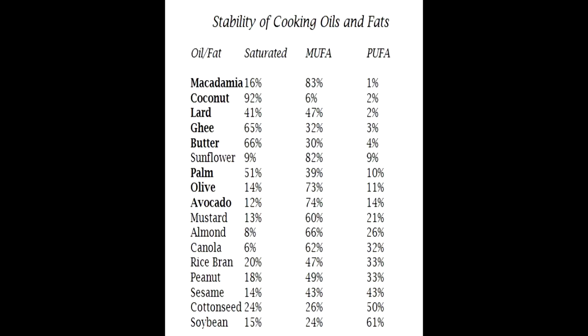Looking at the stability of cooking oils and fats, this is the first thing I look at. The chart shows percentage of saturated fat, percentage of monounsaturated fat (MUFA), and percentage of polyunsaturated fat (PUFA). We want the polyunsaturated to be the least. The top oils on the list are macadamia nut oil, coconut oil, lard, ghee — which is clarified butter — butter, palm, olive, and avocado oil, all very low in polyunsaturated fat.